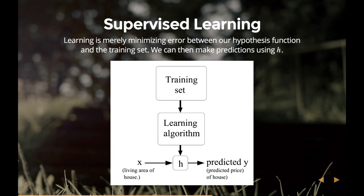To revisit: this is the standard model for supervised learning. You have a giant training set, you run a learning algorithm and tweak it until it's just right, and it creates a function. You can then input unseen data not in the training set, and it outputs a guess — either a number or a category.